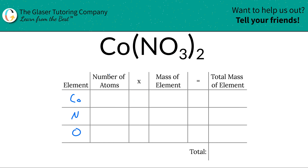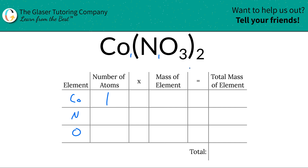Next, we're going to write down the number of atoms, and this is where the subscripts come into play. At the bottom of cobalt there is a 1, so we have 1 cobalt. At the bottom of nitrogen we also have a 1, but nitrogen is tied up in the nitrate anion — the nitrate polyatomic anion — and you have 2 of them. So if in each nitrate there's 1 nitrogen but you have 2 nitrates, you'll have 2 nitrogens in total.